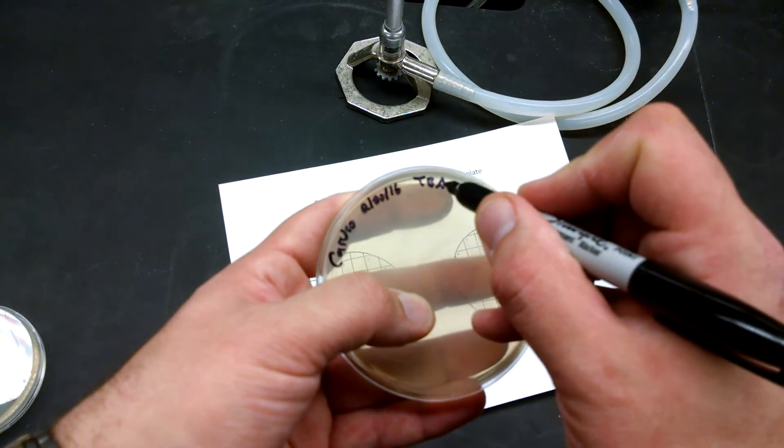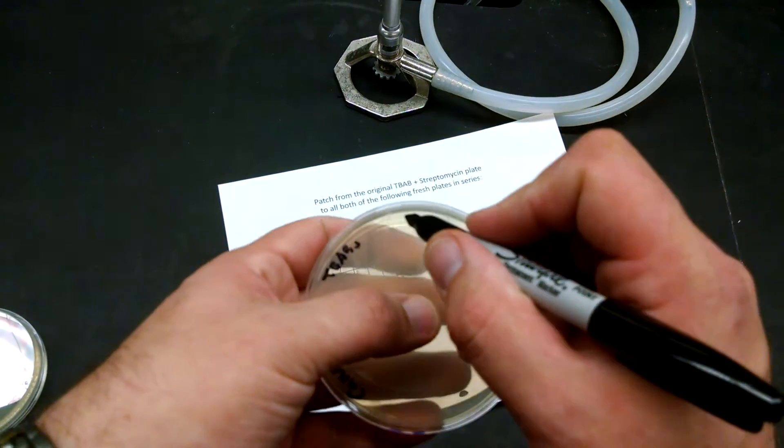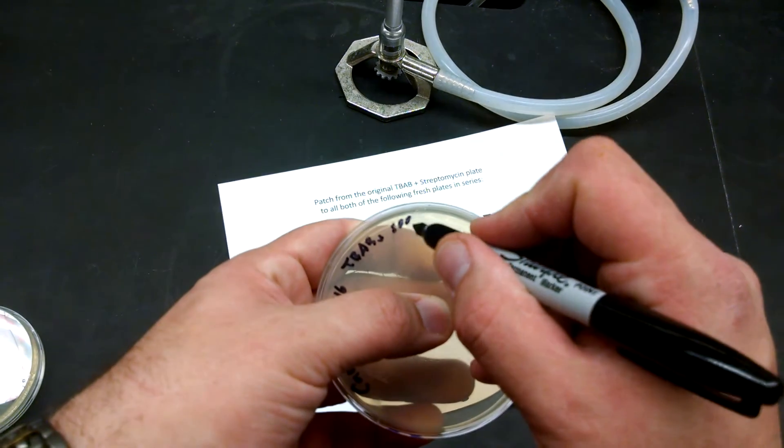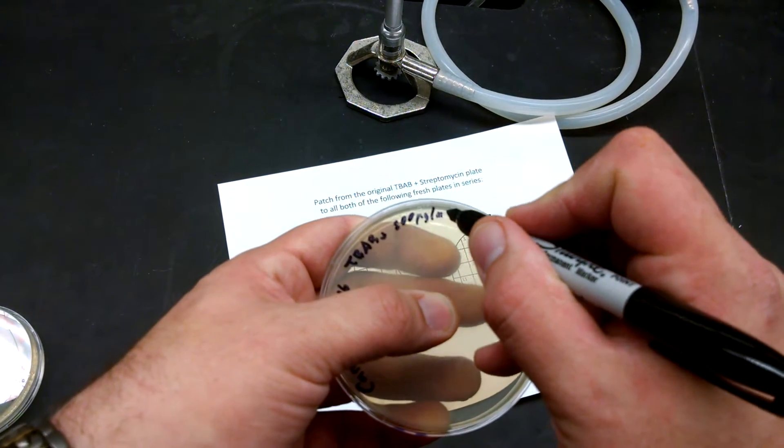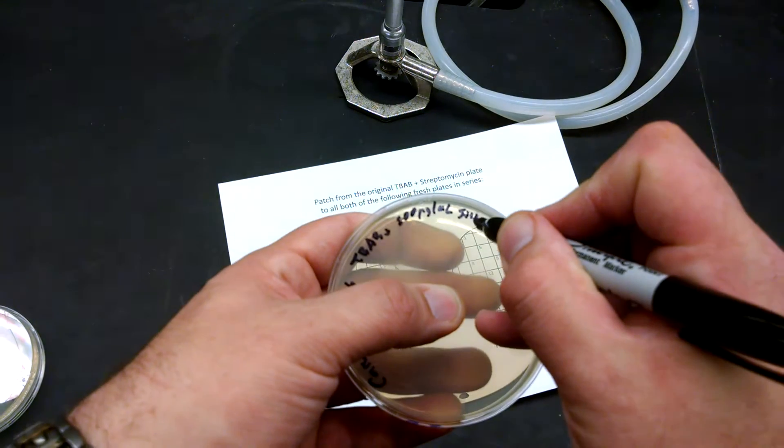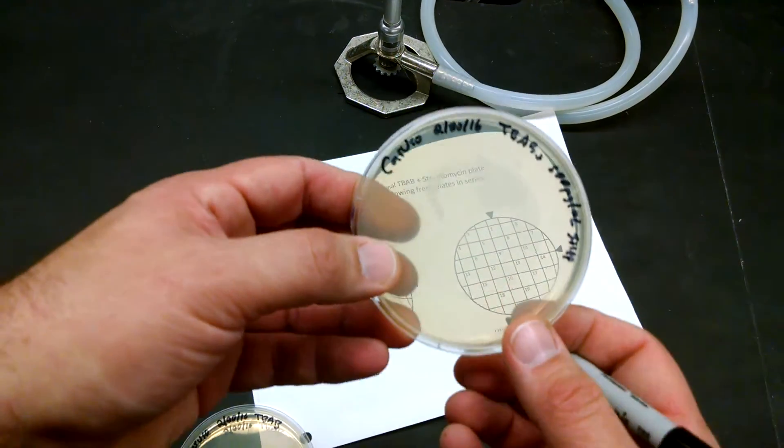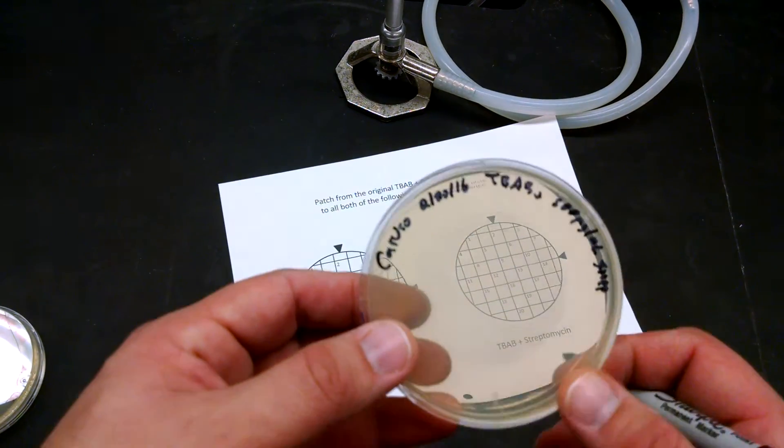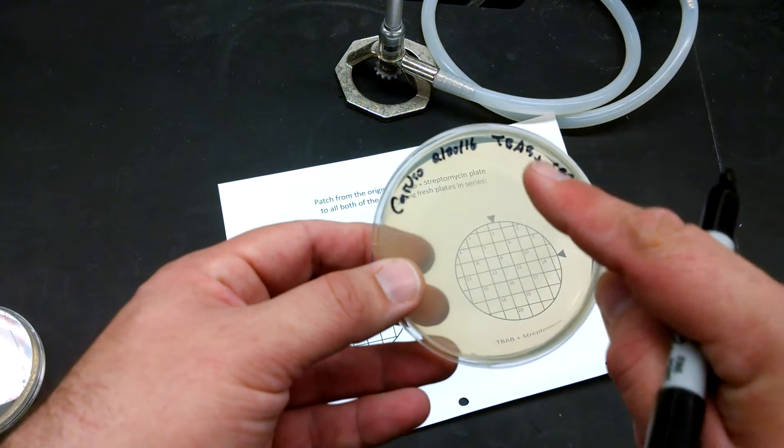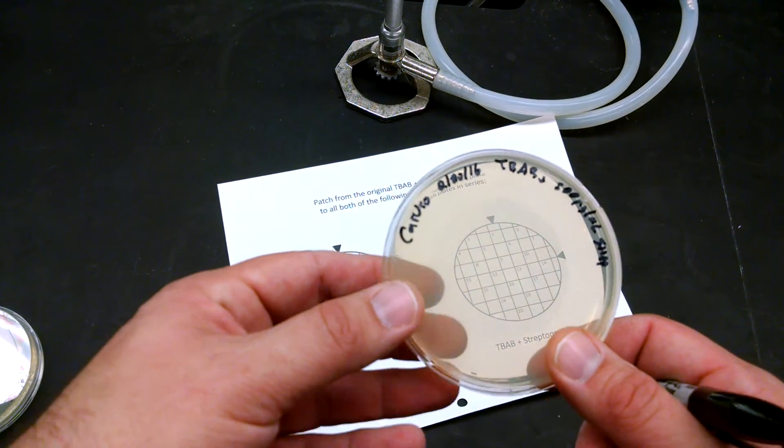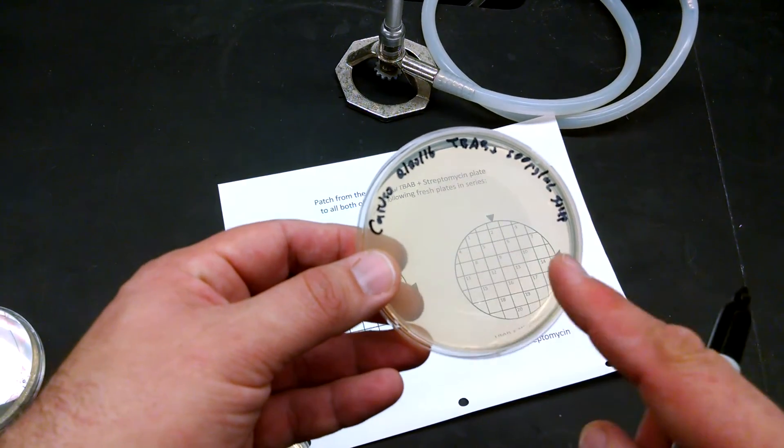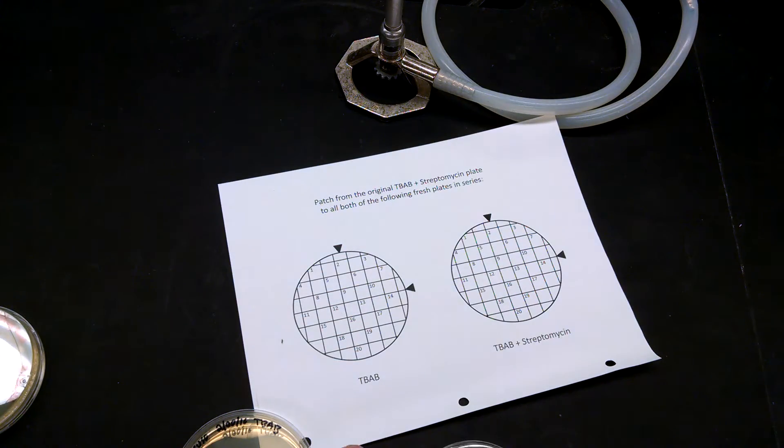And this one is TBAB plus, in this case it's 500 micrograms per mil strep. If your concentration is different or if you're looking at something else, you should label it whatever it is. Make sure you label around the perimeter. Don't label in the middle or else you won't be able to see what you're trying to identify.